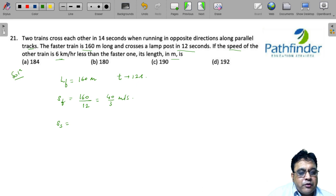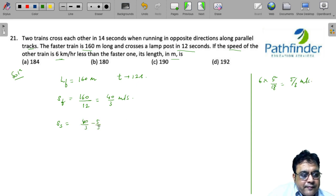Now, if I have to convert 6 kilometer per hour in meter per second, all I need to do is 6 into 5 by 18. So, 5 by 3 meter per second. So, speed of the other train must be 40 by 3 minus 5 by 3, that is 35 by 3 meter per second.